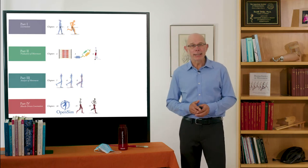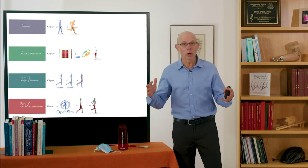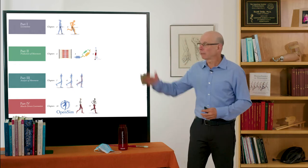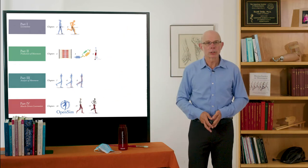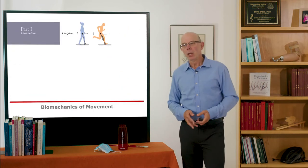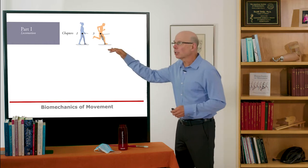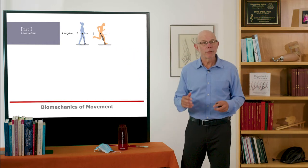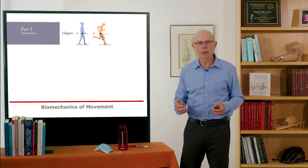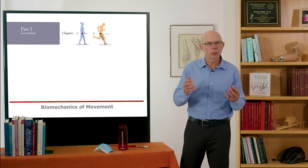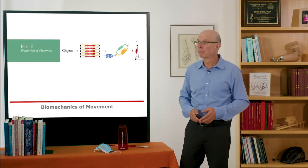You can see the organization of the entire book in this one picture. It's divided into four parts. In part one, we talked about locomotion with very simple biomechanical models — pendula, spring mass, things like that.